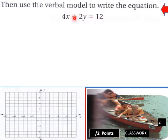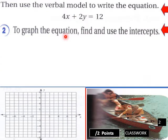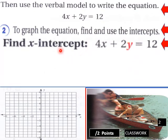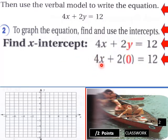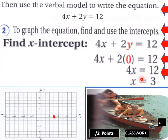We have paddling rate and drifting rate. To graph the equation, find and use the intercepts. Find the x-intercept: 4x plus 2y equals 12. Set y equals 0, so 4x plus 2 times 0 gives us 4x equals 12, then x equals 3. Here is our x-intercept on the graph.